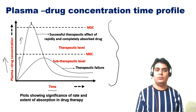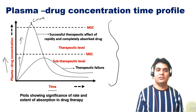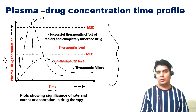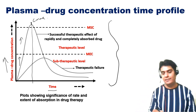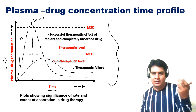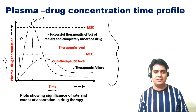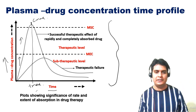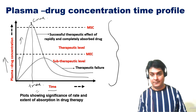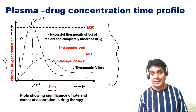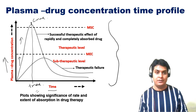We observe a steep increase in plasma drug concentration and finally a highest value, that is Cmax. The time at which we get the maximum concentration of the drug in blood is known as Tmax — the time of maximum concentration.